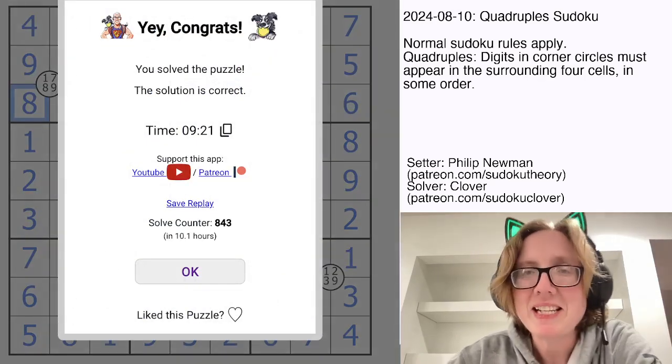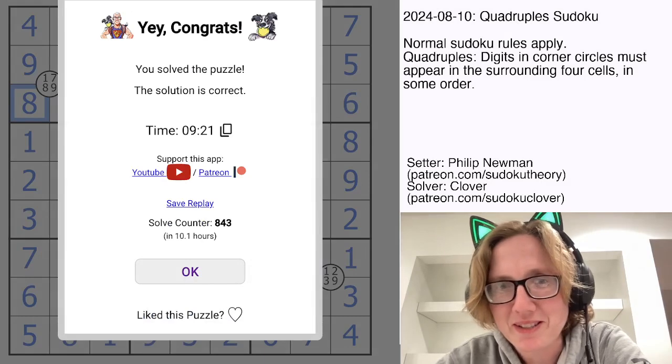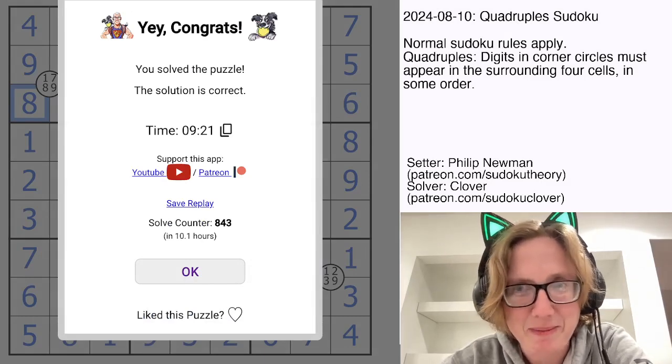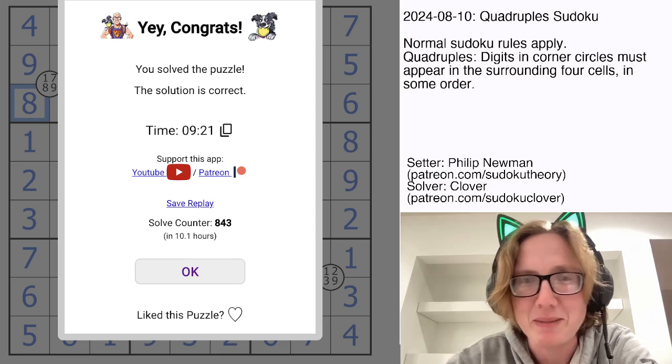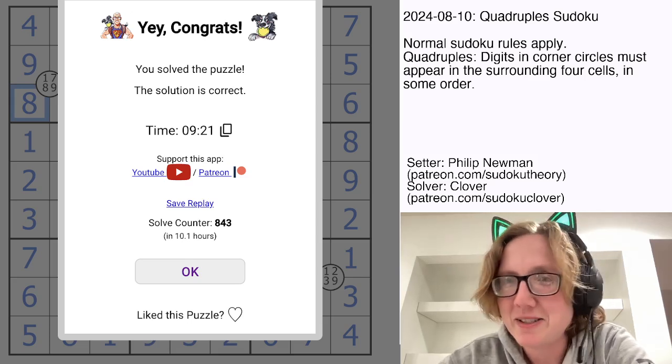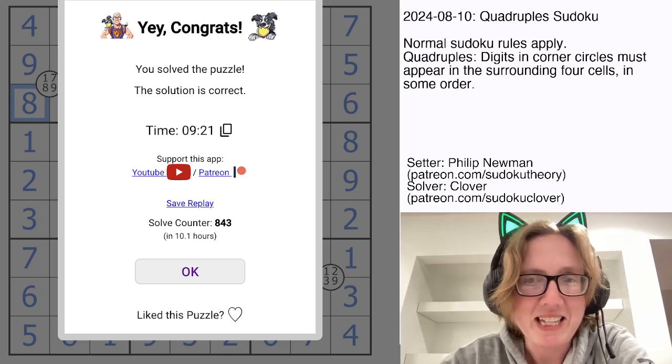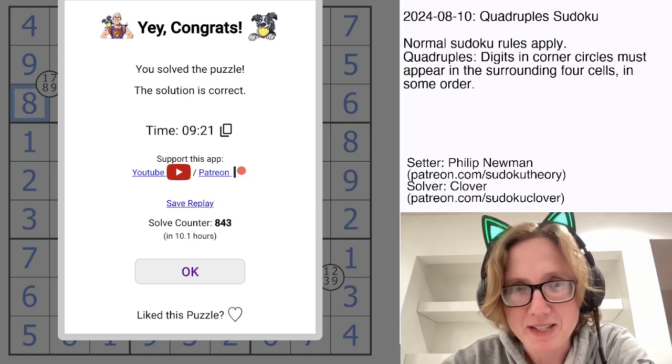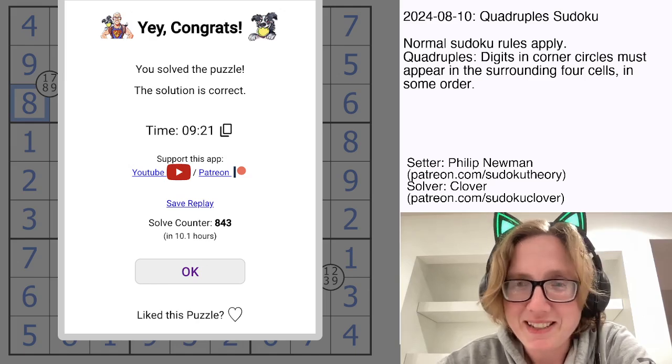And that's how you solve Philip Newman's quadruple Sudoku from August 10th. Go ahead and place your guesses for what's coming tomorrow if you haven't already seen it by the time this video comes out. Solve this puzzle yourself using the link in the description below this video and enjoy. I'll see you next time.